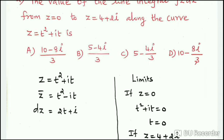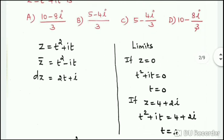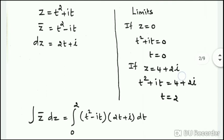First, if z = 0, then t² + it = 0, giving T = 0. If z = 4 + 2i, then t = 2. So the integral limit is 0 to 2. z̄ equals t² - it, and dz equals (2t + i) dt.